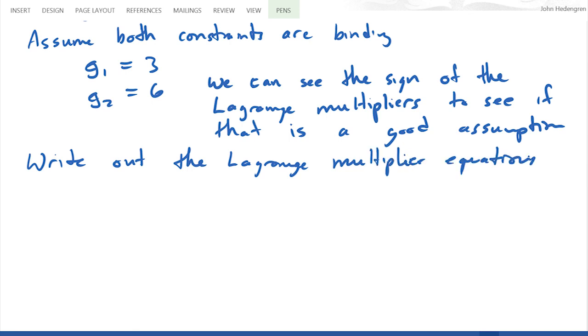I have my gradient of my objective minus a summation of my Lagrange multiplier times my gradient of my equations, that equals zero.